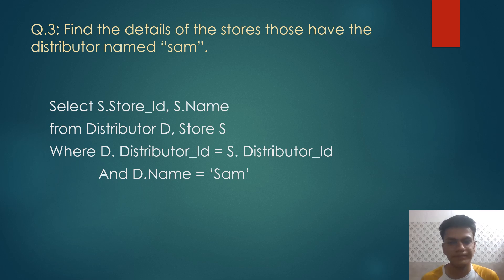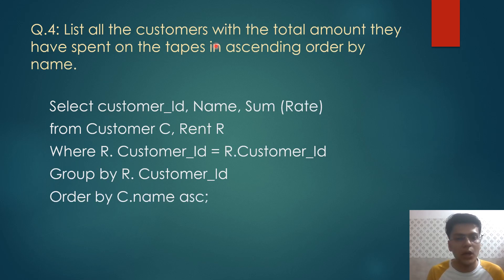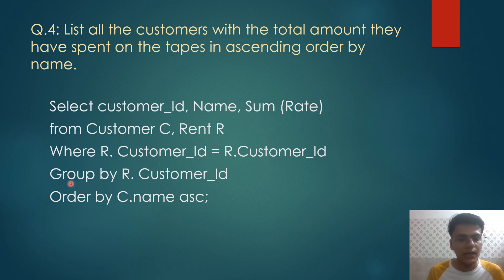The fourth query is to list all the customers with the total amount they have spent on tapes in ascending order by name. We have selected customer ID, name, and the aggregate function sum on attribute rate from customer c, then joined the table on customer ID, then grouped the data by customer ID and ordered it by customer name. 'ASC' represents ascending order; if we write 'DESC' it will show descending order.